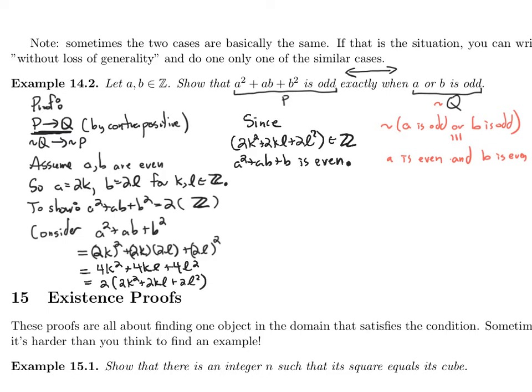Now we need to do the other direction: q implies p. Let me write that down and then start a new slide with more room. So we need to show: a is odd or b is odd implies that a² + ab + b² is odd. That's q implies p.